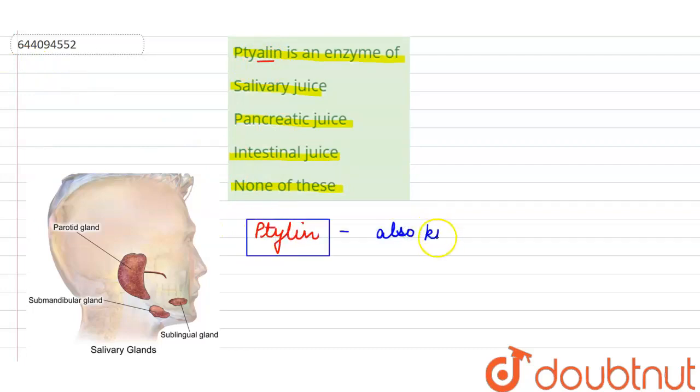Also known as salivary amylase, it is present in the saliva of humans.